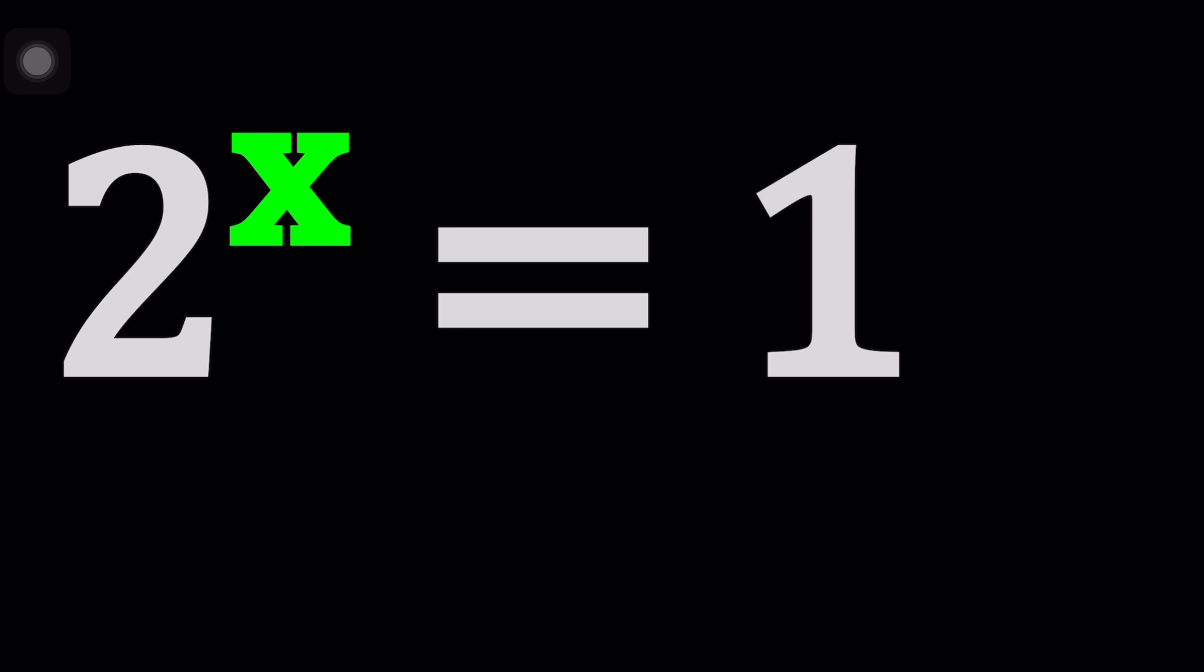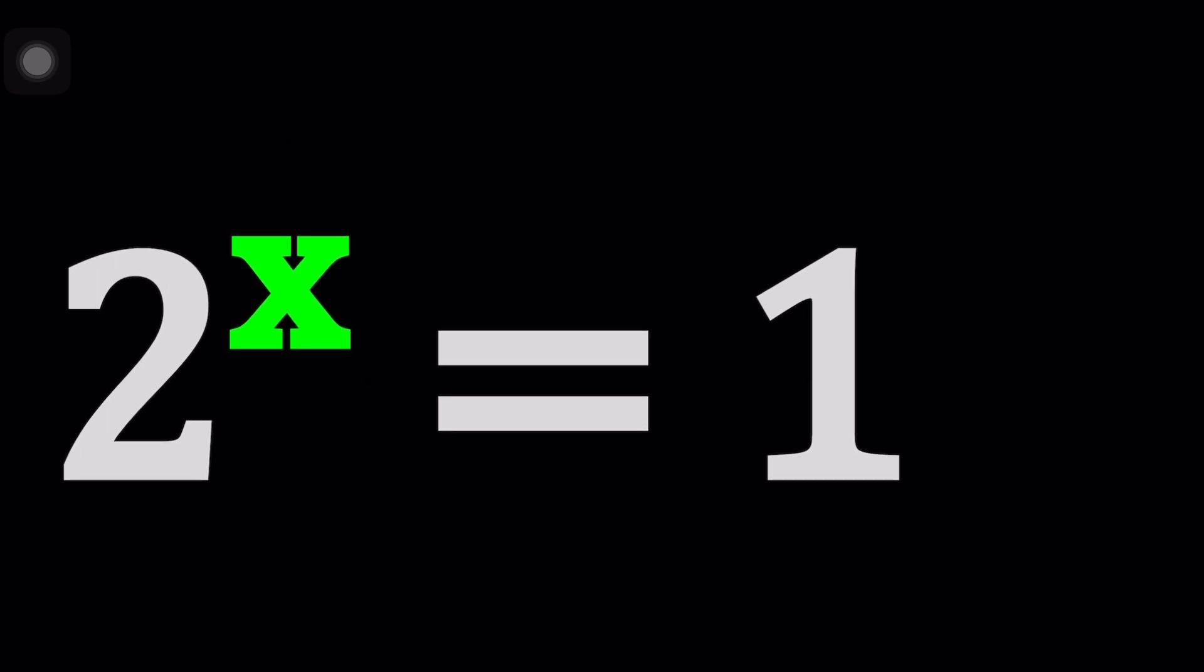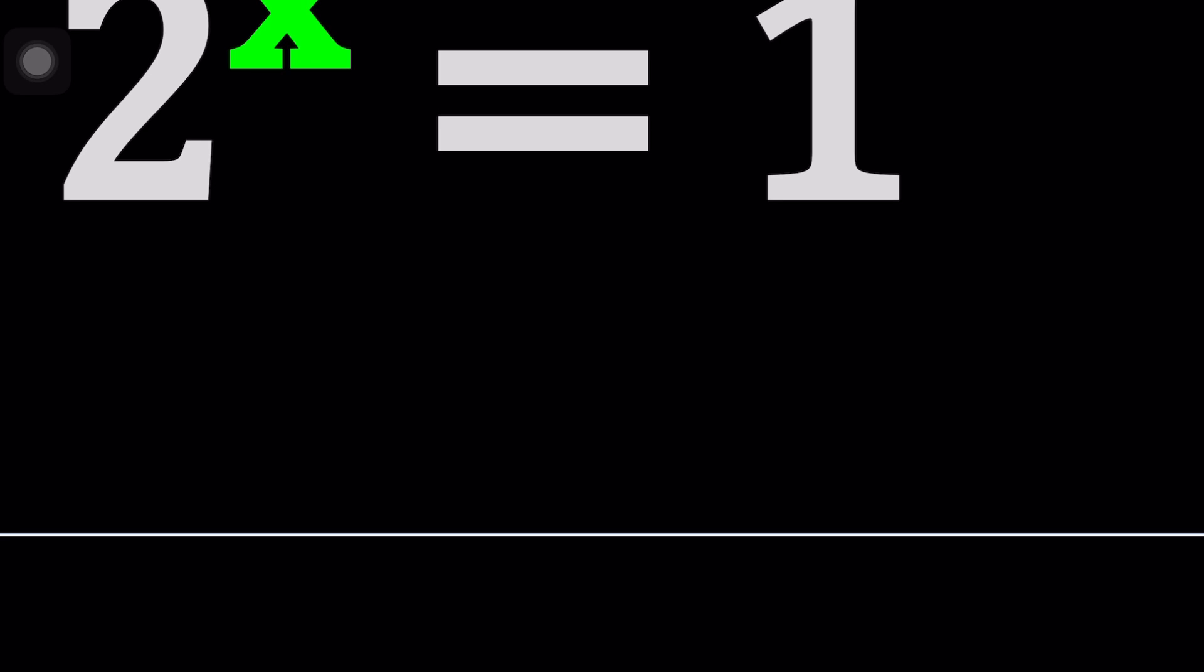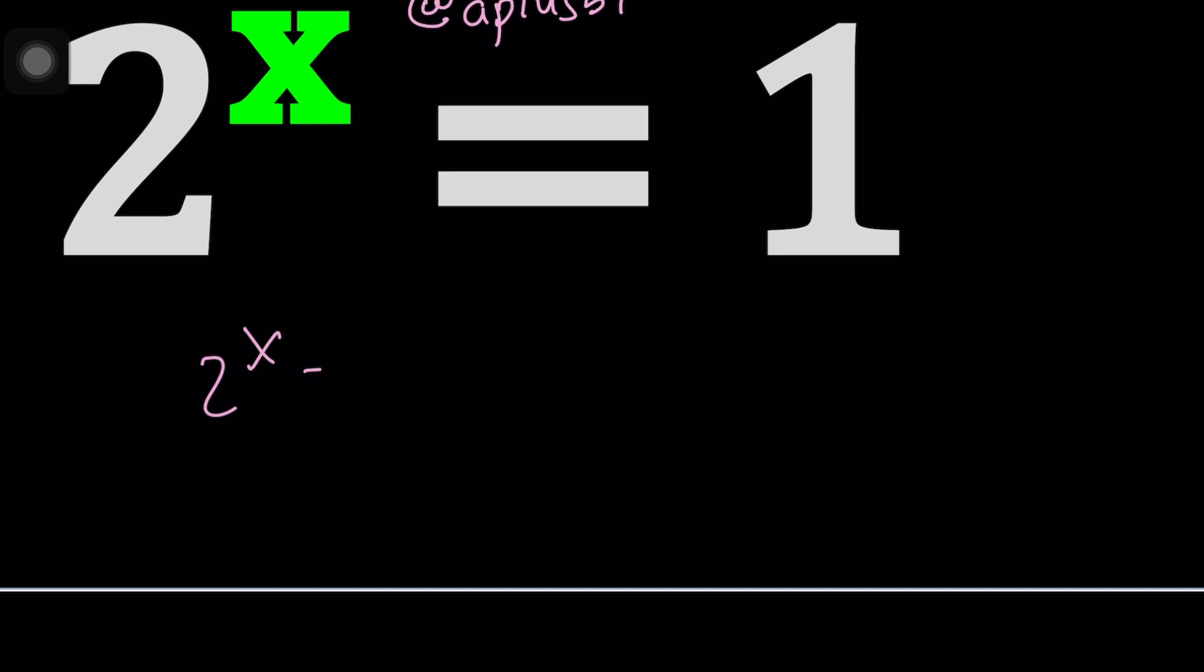Okay well even though this channel is not all about complex numbers because I have another channel called a plus bi, go ahead and check it out. We're gonna be looking at some complexities here. So first of all you know x equals 0 satisfies this equation. If I gave you something like 2 to the power x equals 0 this would not have any solutions at all, even in the complex world.